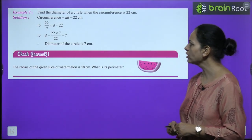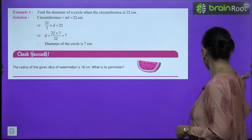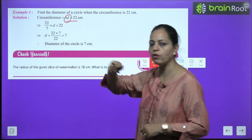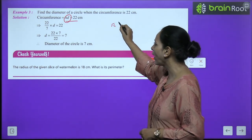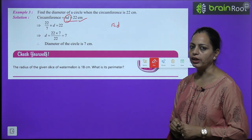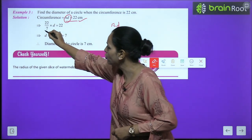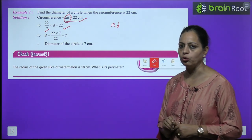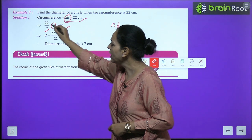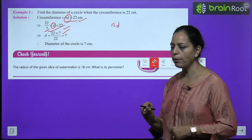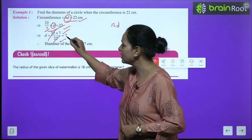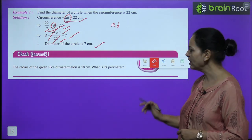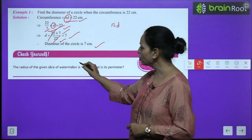Example 3: Find the diameter of a circle when the circumference is 22 cm. Circumference is given; we need to find diameter. Using C = πd: (22/7) × D = 22. Solving: D = 22 × 7/22 = 7. So the diameter is 7 cm. Similarly, a practice question: the radius of a semicircular watermelon slice is 18 cm — find the perimeter (circumference of semicircle + diameter).